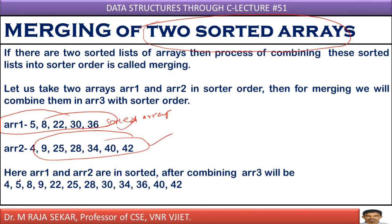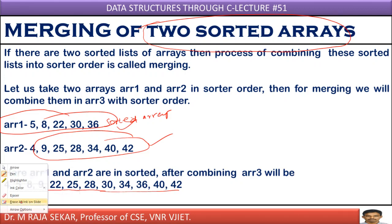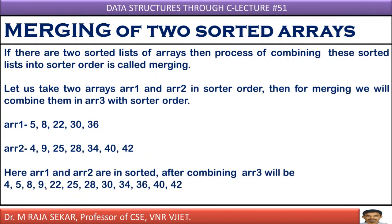After merging these two sorted arrays, what am I getting? 4, 5, 8, 9, 22, 25 — I am arranging all the elements in sorted order. What is the application? I will make use of this concept in implementing merge sort in lecture number 53.